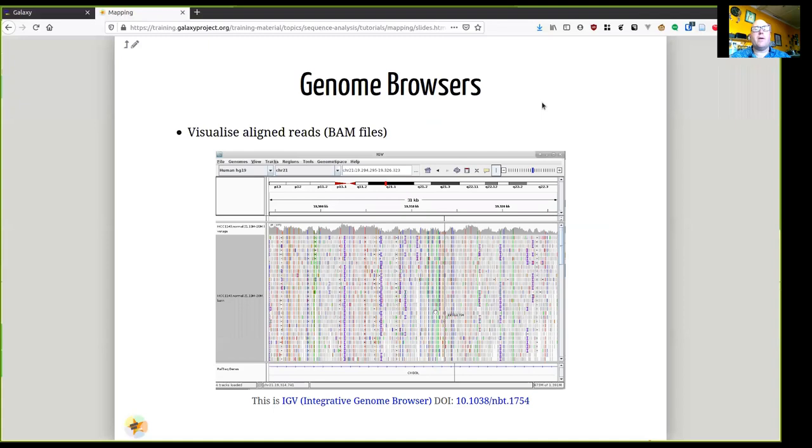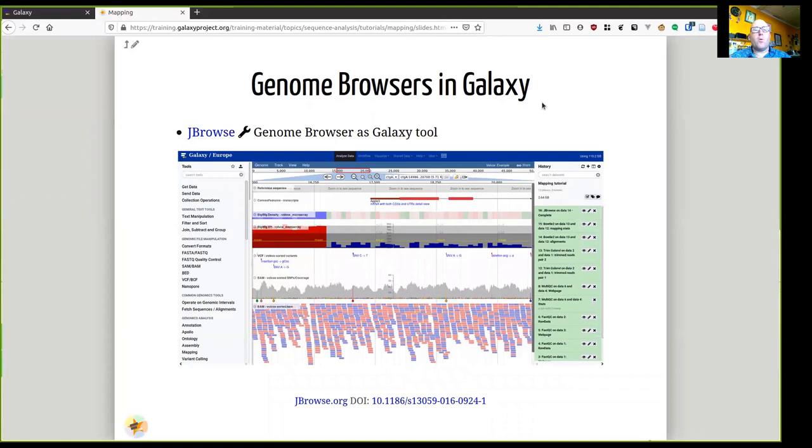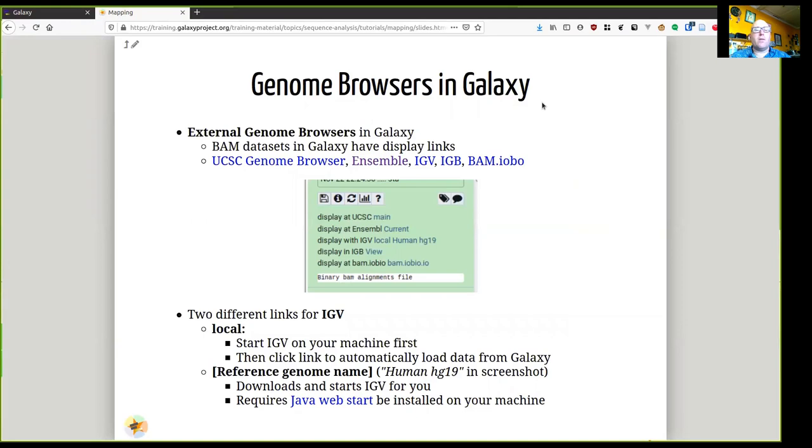These are not really easy to read by eye. So we have genome browsers like this is IGV being demonstrated here, used for looking at what a read alignment looks like. Or within Galaxy, you can run something like JBrowse.